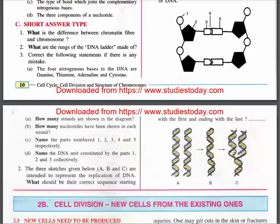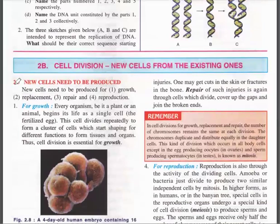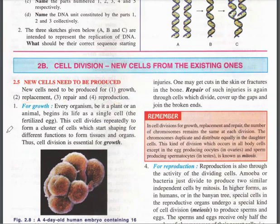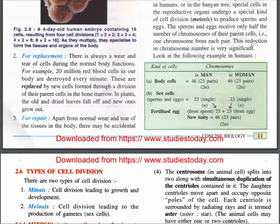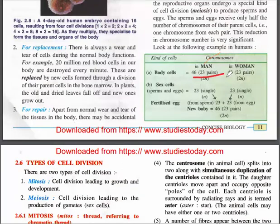New cells are produced from existing ones for growth, replacement, repair, and reproduction. In humans, there are 46 chromosomes — 23 pairs. Sperm and egg cells each have 23 chromosomes, and when they combine at fertilization they restore the full 46, giving 23 pairs.